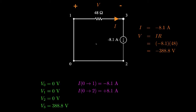Now because of the current source, determining the currents in the single loop circuit is relatively straightforward. We do though need to be careful about the reference direction for the current. If we define the current as flowing from node 0 toward node 1, then the current value will be negative 8.1 amps, which is the value of the current source which has a polarity direction from 0 to 1. If on the other hand we define the current as flowing from node 0 toward node 2, then the current value will be positive 8.1 amps.